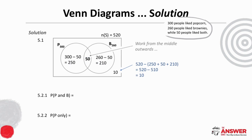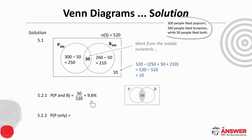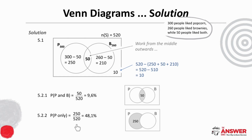The probability that a person selected at random likes both popcorn and brownies is 50 over 520 which is 9.6 percent, and the probability that a person selected at random likes popcorn but not brownies is 250 over 520 which is 48.1 percent.